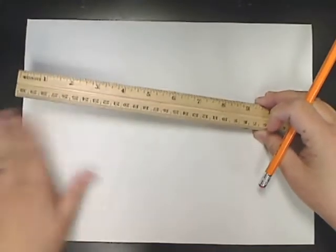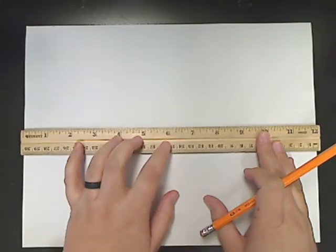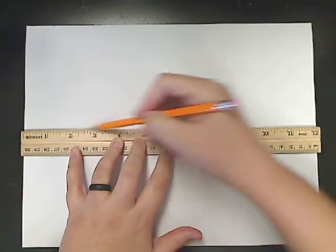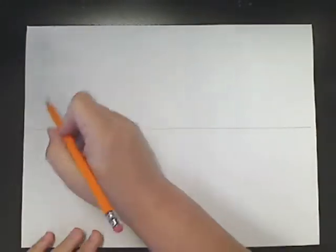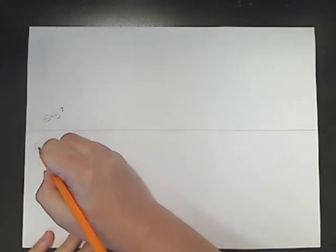If you need some additional practice with drawing in two-point perspective, you can always use another page in your sketchbook. You'll have to start with a horizon line. This divides the sky from the ground.